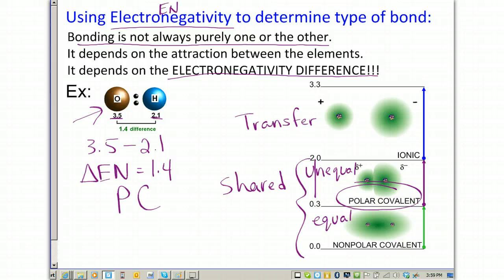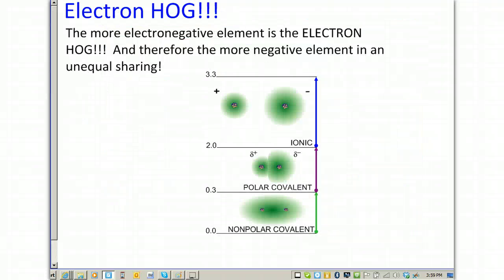All that means is the electrons are being shared unequally between the oxygen and the hydrogen. Realize that oxygen, let's look at the next page, oxygen and hydrogen - oxygen is going to be what's called the electron hog, where it has more pull on the electrons because it's more electronegative. And so, therefore, the more negative element is always going to be the higher electronegative element.